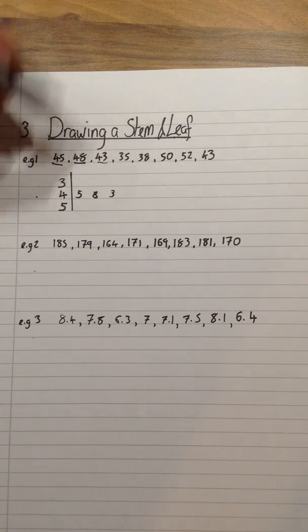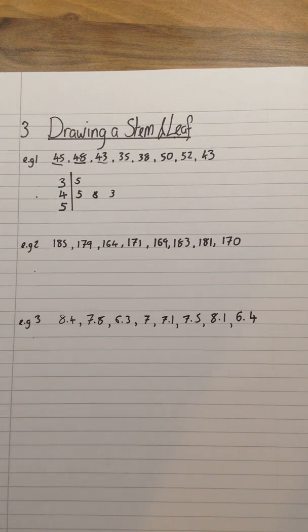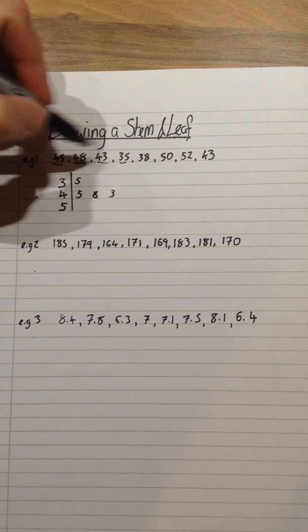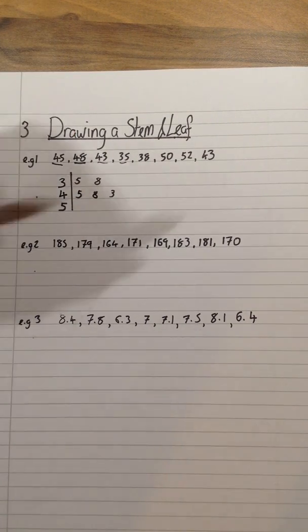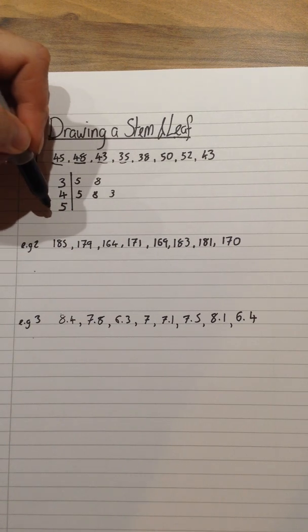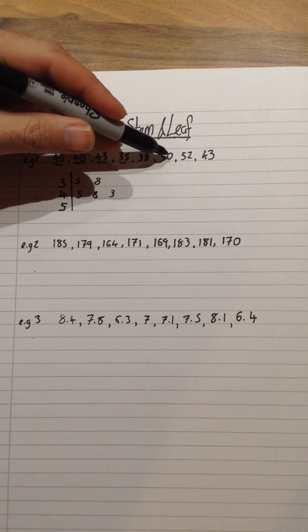35 is my next number. That's on the 30s row. So a little 5 just there. And then 38. So again, a little 8 just there. 50 is my next number. Now that goes on the 5 row. The leaf, which is these numbers, here is 0. I must still put down the number 0, because otherwise I do not know from the diagram that the number 50 actually existed.